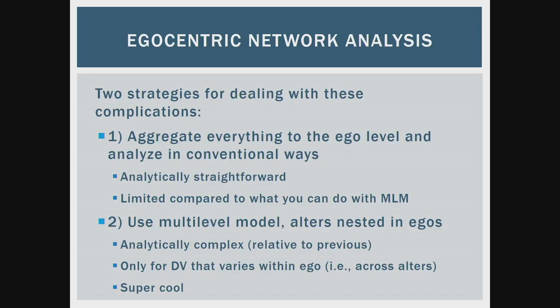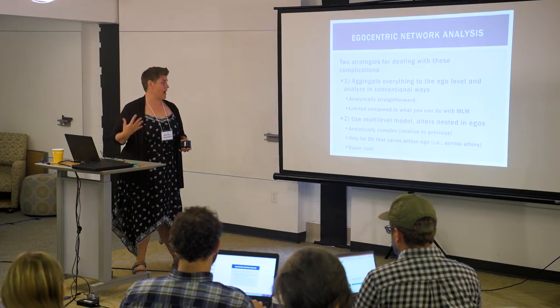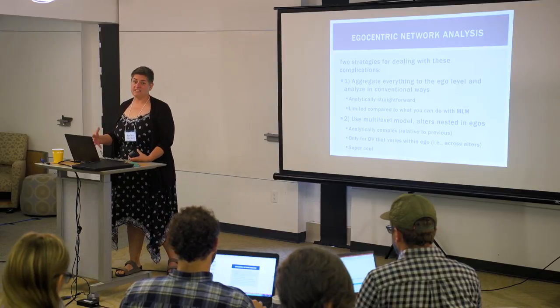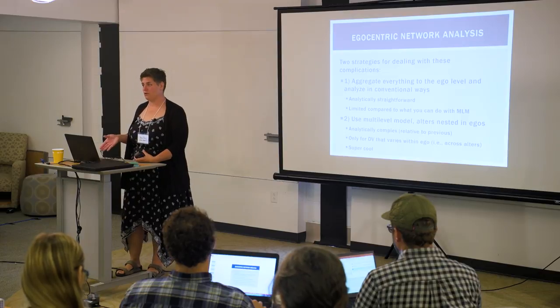One strategy is to aggregate everything up to the ego level and then analyze using conventional regression models. That's limited compared to the super awesome things you can do with multi-level modeling. The second option is to use multi-level models with alters nested in egos. It has all these fancy names and seems complex but it's actually pretty straightforward, particularly in its interpretation. The only catch is it's only for dependent variables that vary within egos — that vary across alters.